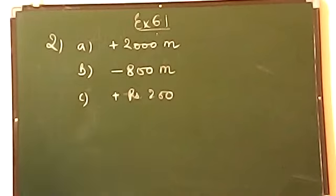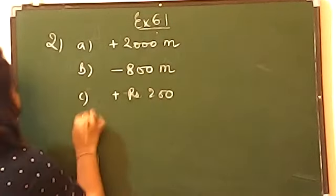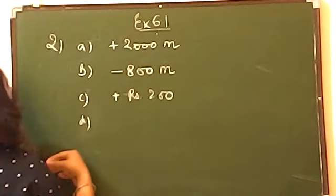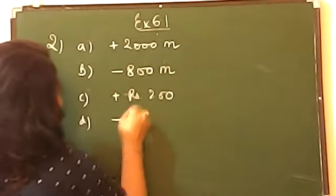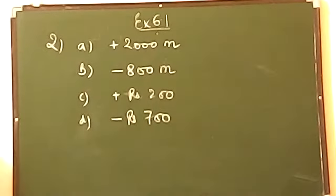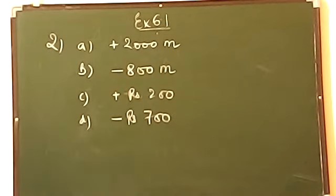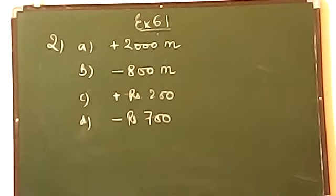Now the next one: a withdrawal of rupees 700. Withdrawal means you are taking out money, so the sign is minus. The answer is minus 700 rupees. Question number 2 is now completed.